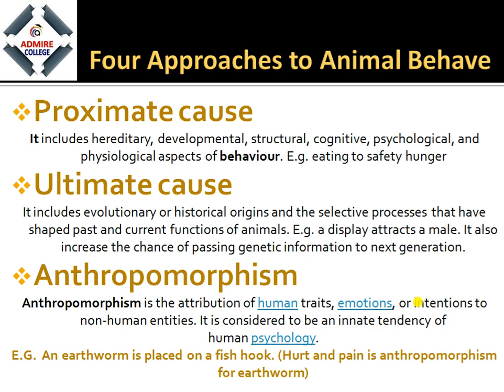Next are proximate cause and ultimate cause. The proximate cause is the immediate cause for an organism to survive in the environment, and includes hereditary, developmental, structural, cognitive, and physiological aspects of behavior — for example, eating due to hunger. The ultimate cause includes evolutionary or historical origins and the selective processes that have shaped the past and current function of the animal — for example, male attraction and mating increases the chance of passing genetic information from one generation to the next.